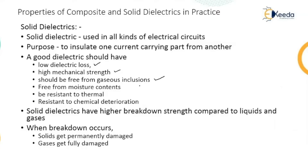Since the application is electrical, when voltage is applied current passes through the circuit, increasing the temperature. So the solid insulating material must be resistant to thermal change. Increased temperature can cause chemical reactions on the insulating material, so the material must also be resistant to chemical deterioration. These are the six properties based on which a solid dielectric can be selected.